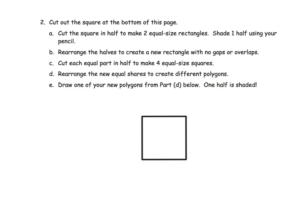The last problem is really just an ongoing activity where we want students to investigate. It says: cut out this square. Now cut this square in half to make two equal-sized rectangles. Shade one half. So we're going to cut this rectangle in half and shade in one of those halves.